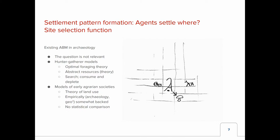This site selection or environmental function has been used a lot in archaeology in all kinds of models. The typical ones where it is relevant are optimal foraging theory-related models, where hunter-gatherers move around and search for resources which guide the movement. Another example is a village ecosystem model with a theory of land use and some connection to empirical data — usually not a statistical connection — based on which agents take decisions.